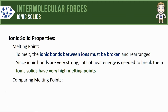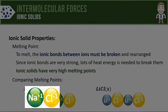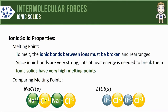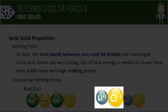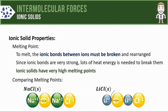We can also make comparisons between the melting points of different ionic solids. Let's compare sodium chloride with lithium chloride. Both contain chloride ions, so the key difference is between lithium and sodium. Sodium is further down the alkali metals column, making it larger, while lithium is closer to the top and smaller. The distance from the center of a sodium ion to its neighboring chloride is fairly long, whereas for the smaller lithium ion, that distance is shorter.